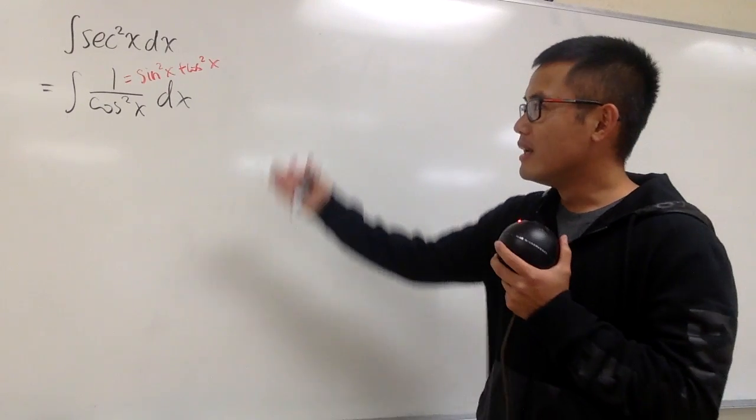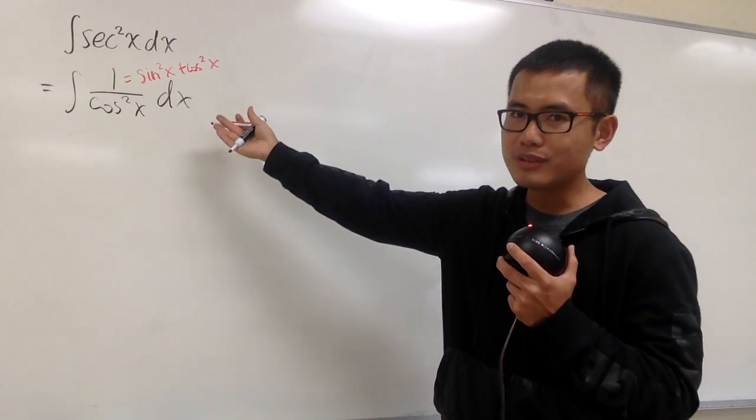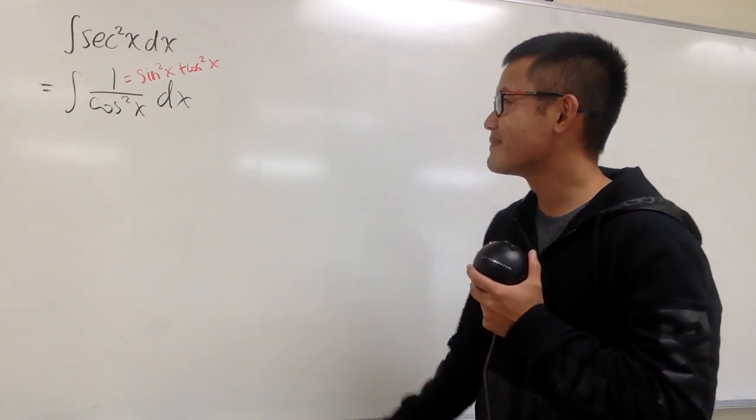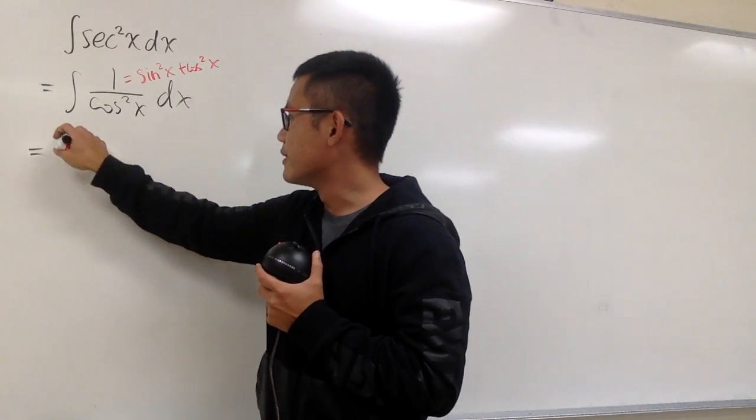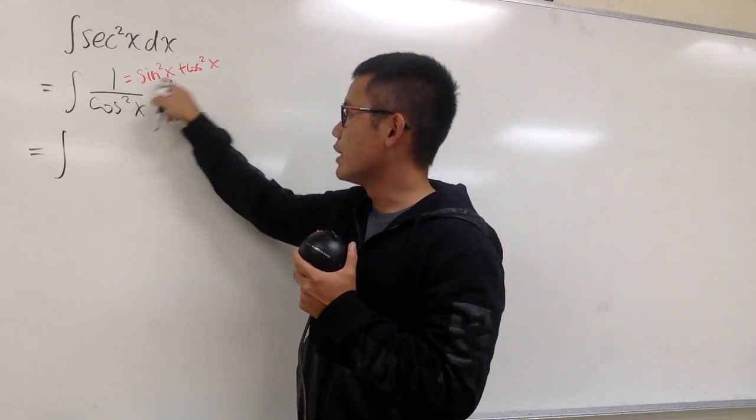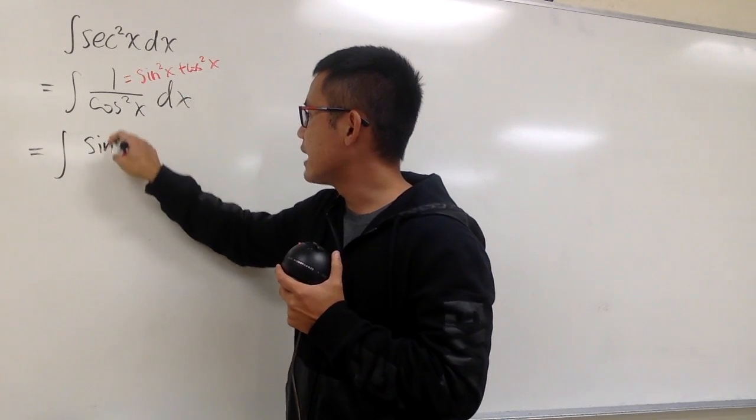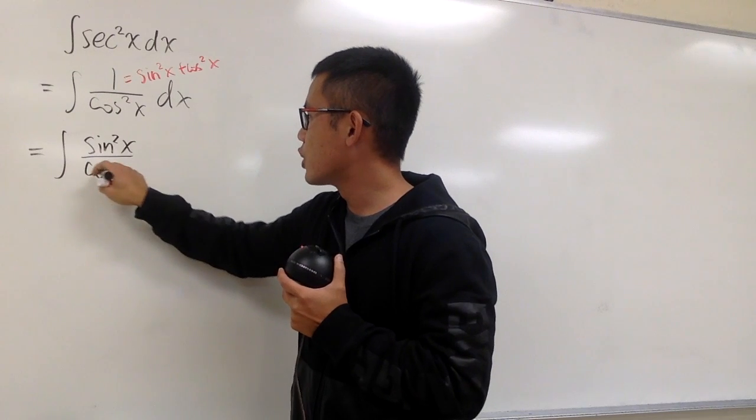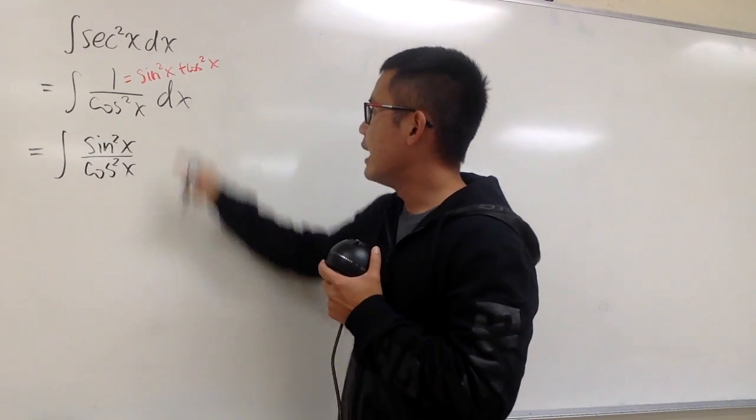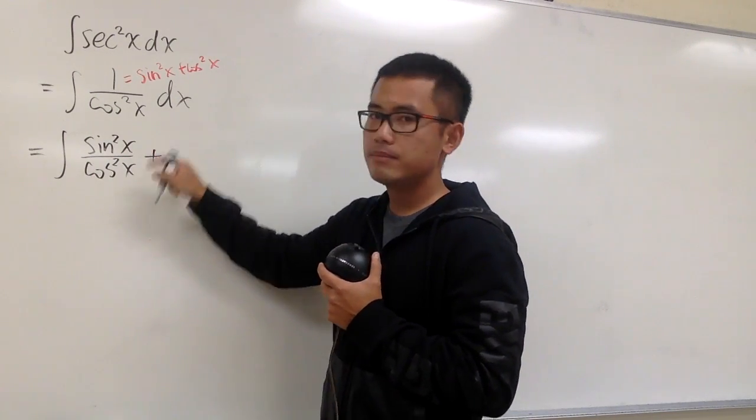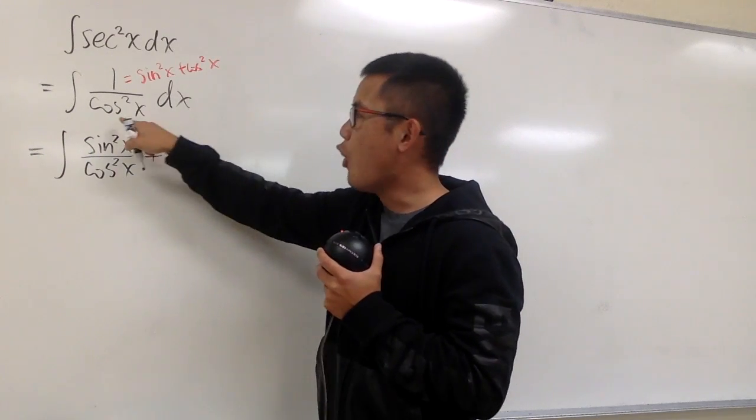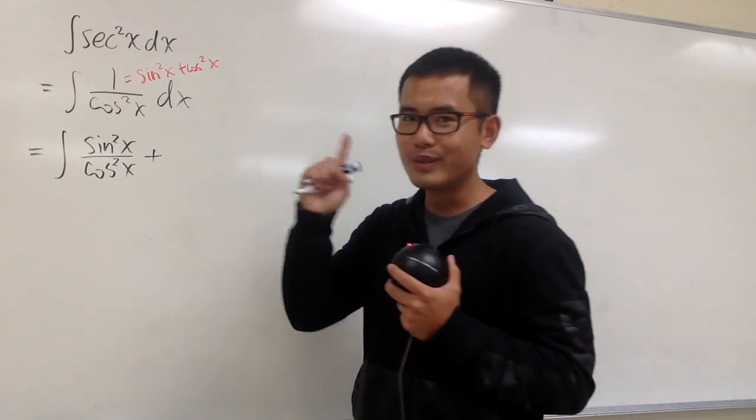And keep in mind, sometimes when we're doing integrals, the more the better. And this is why I'm bringing this up. So now let's integrate. We can also split the fraction. This is sine squared x over cosine squared x, and then we'll be adding this with cosine squared x over cosine squared x, which is just 1.